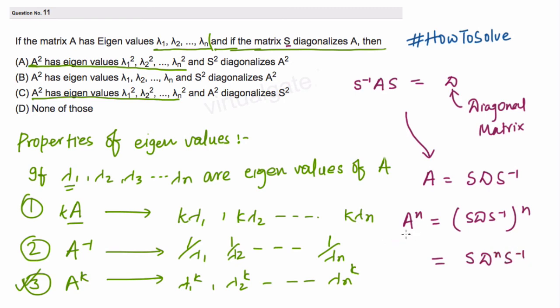To diagonalize A^n, what we need is the same S. The same S will diagonalize A to the power n also.